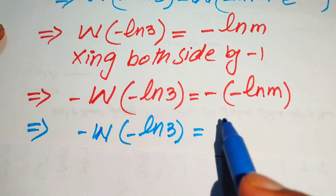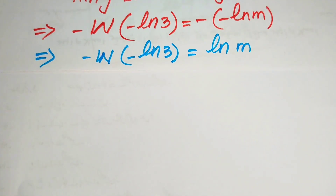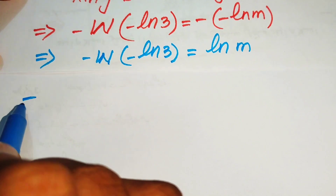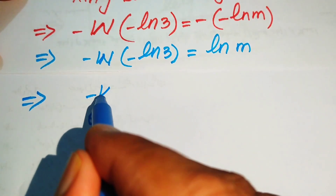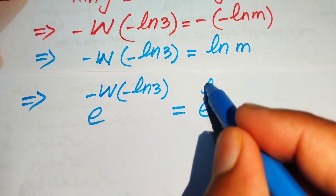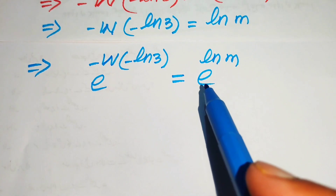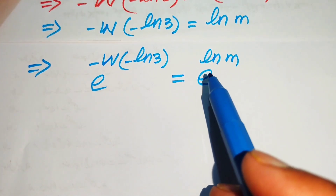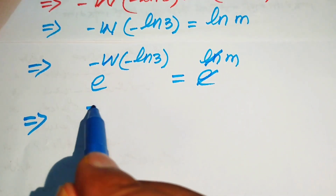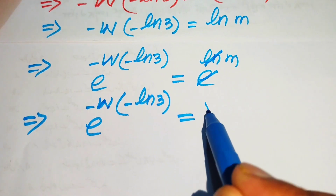To find m, we take the antilog on both sides to remove the log term. This gives e to the power of minus W of minus log 3 equals e to the power of log m. Since e and log cancel each other, this simplifies to e to the power of minus W of minus log 3 equals m.